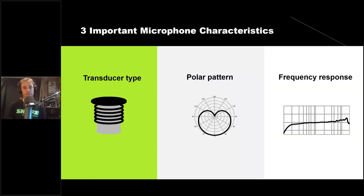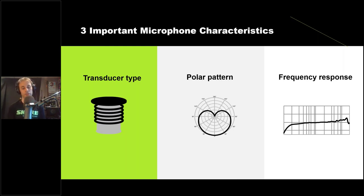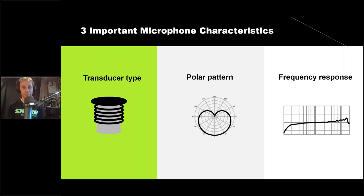Let's delve into the characteristics. There are three important mic characteristics to cover. When looking at choosing a microphone, these are the most important: transducer type — how the microphone translates sound waves into an electrical signal; polar pattern — how the microphone responds to sound coming from different directions; and frequency response — essentially how the microphone sounds, or how it reproduces sound.